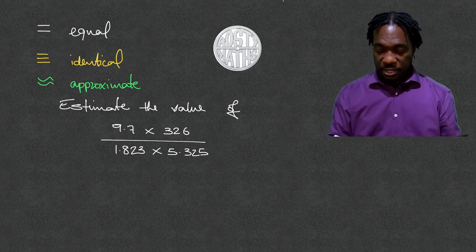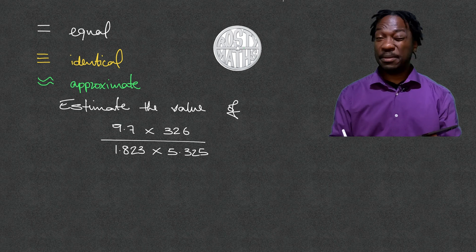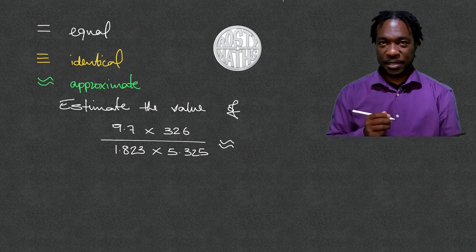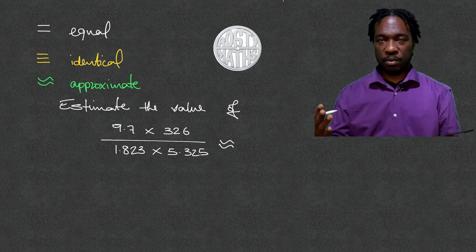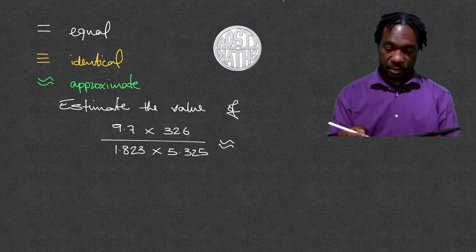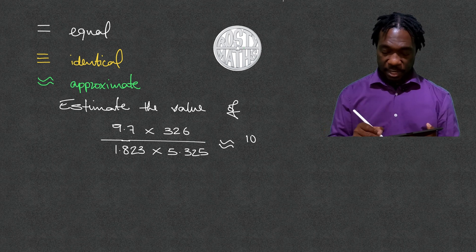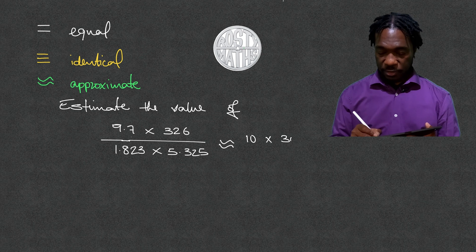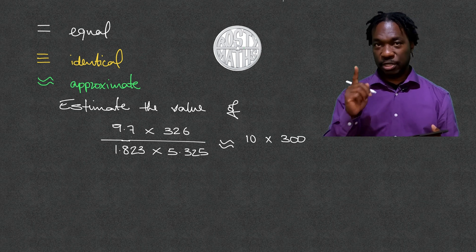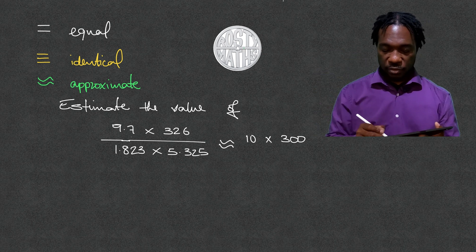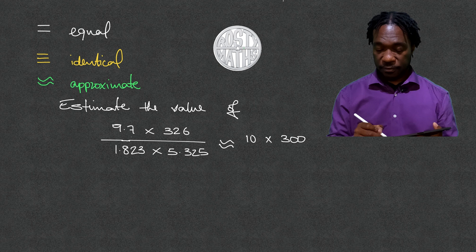Anyway, here we go. The first thing we do is round everything to one significant figure, and the minute you round, we're going to have a wavy equal sign because all the answers now will be approximate. So let's have a look: 9.7 will round to 10, and then 326 will round to 300. Again, make sure you check that video out because we will round it down. Don't forget, we want one significant figure, so that's three and then two zeros there.